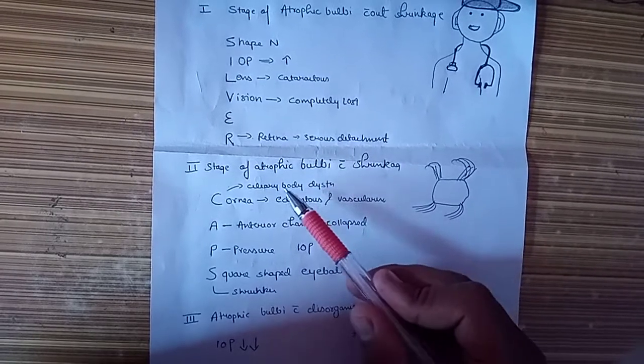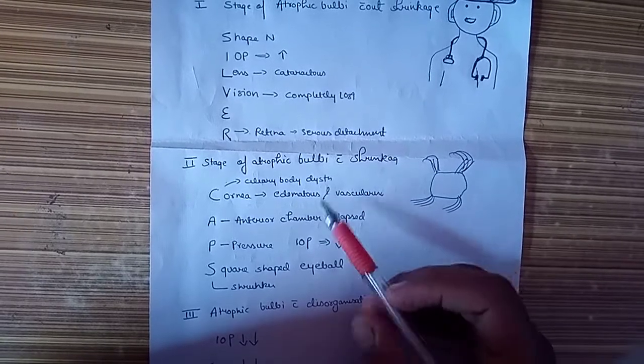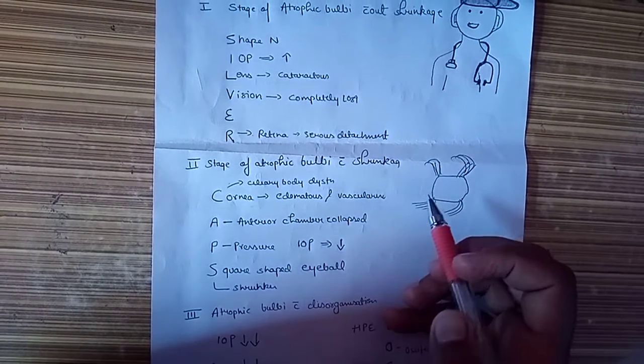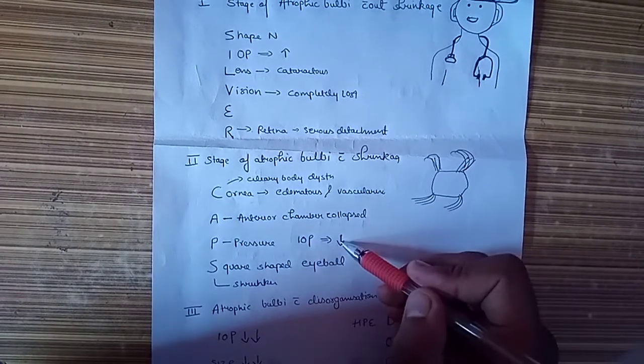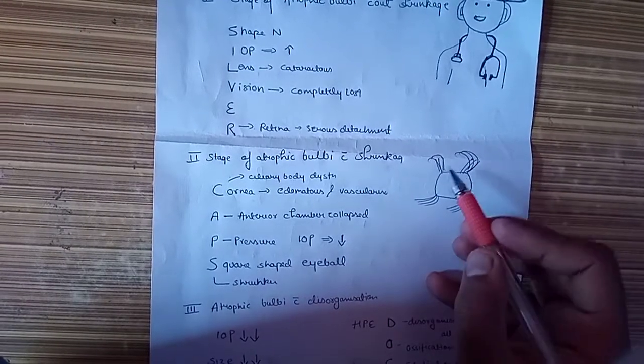A is anterior chamber will be collapsed because IOP production has decreased, so the pressure will be low. Because of this shrunken eyeball, still the four recti are holding on to the eyeball.